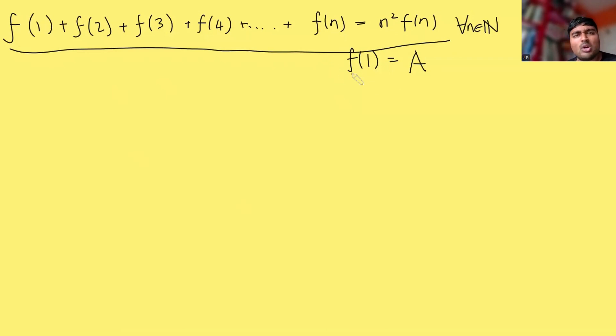And we're told that f(1) is some constant which we're just going to call a and our job is to find an explicit formula for f(n). How do we do this?